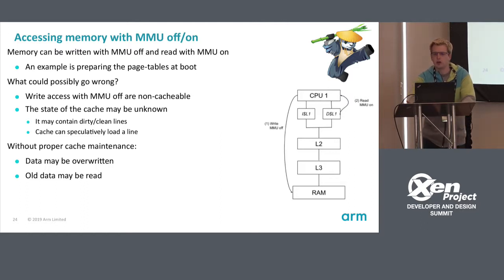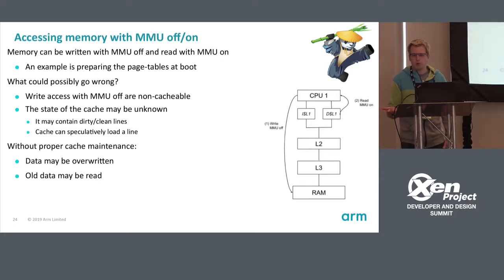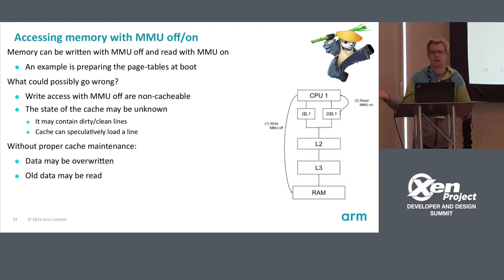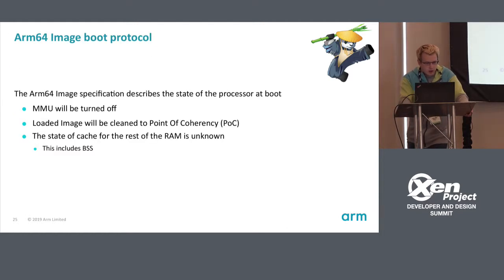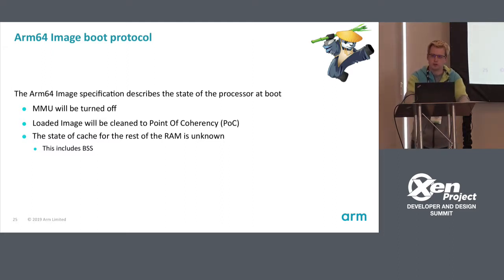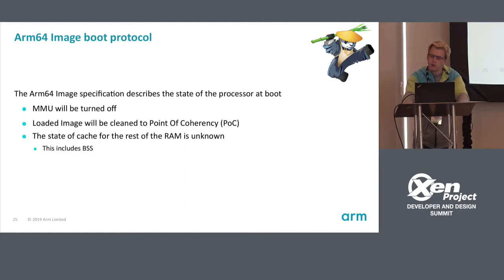The cache can also speculatively load a line. So if you decide to write to memory and then later enable caching, without proper maintenance your data may be overwritten by a dirty line being evicted, or you may read stale data because the cache didn't reload it. Thankfully, the ARM64 image boot protocol — created by the Linux kernel and also used by Xen — describes the processor state at boot: whether the MMU is on or off, the cache state, state of certain registers, etc. When you boot, the MMU is turned off.